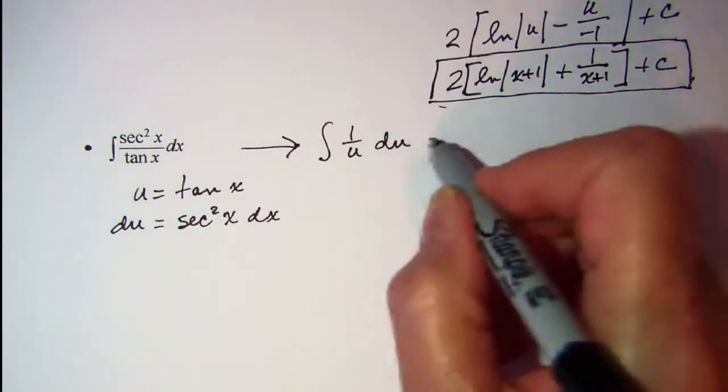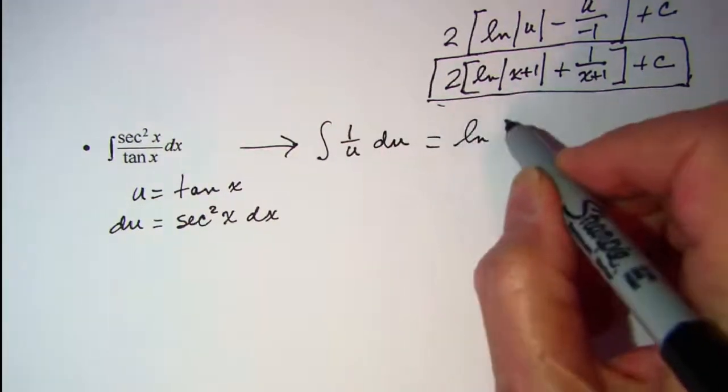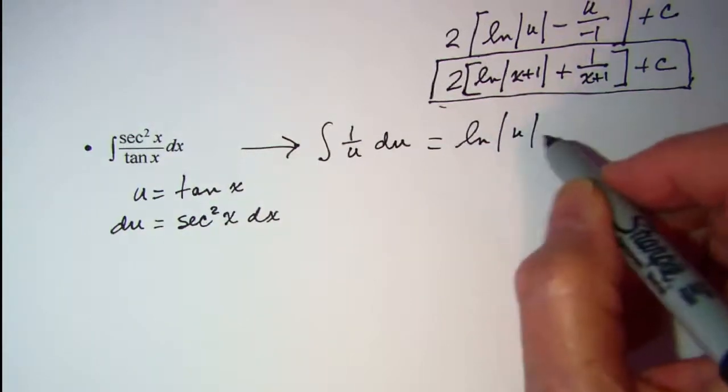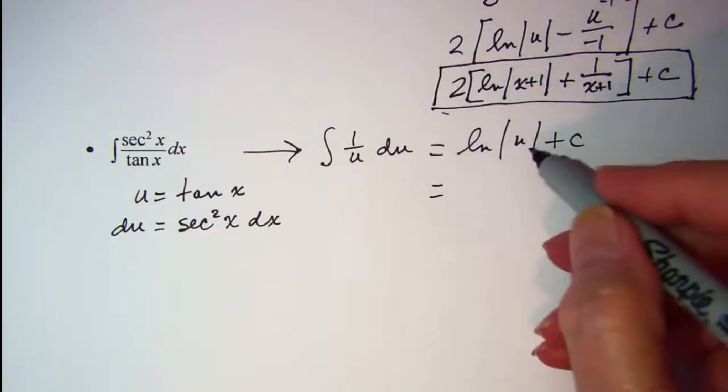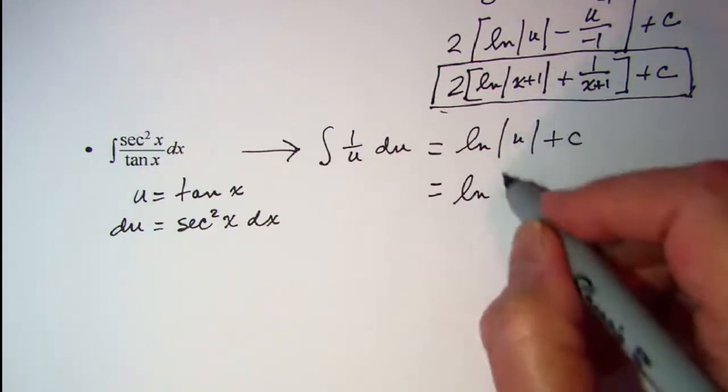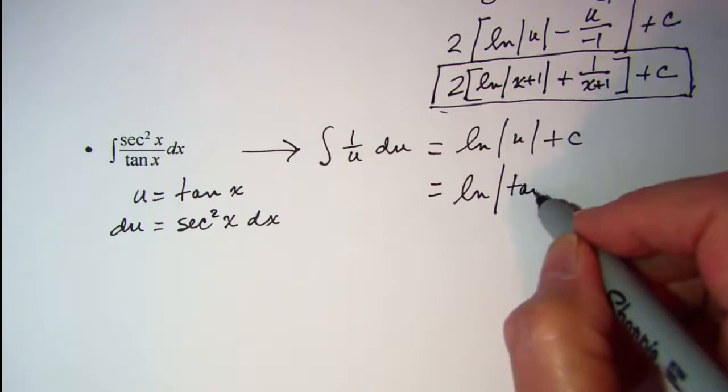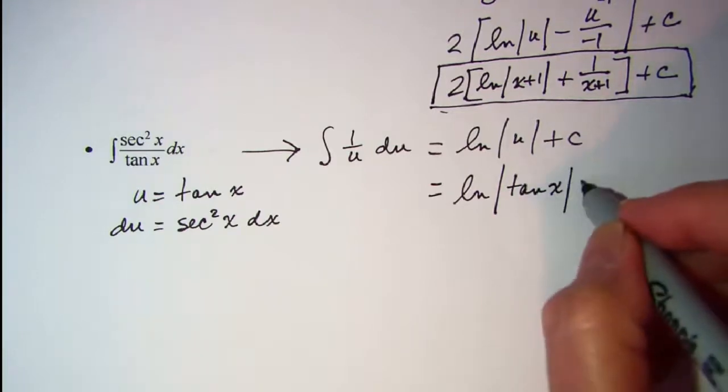That is ln of absolute value of u plus a constant. So if we sub back in we have ln of tangent x plus a constant.